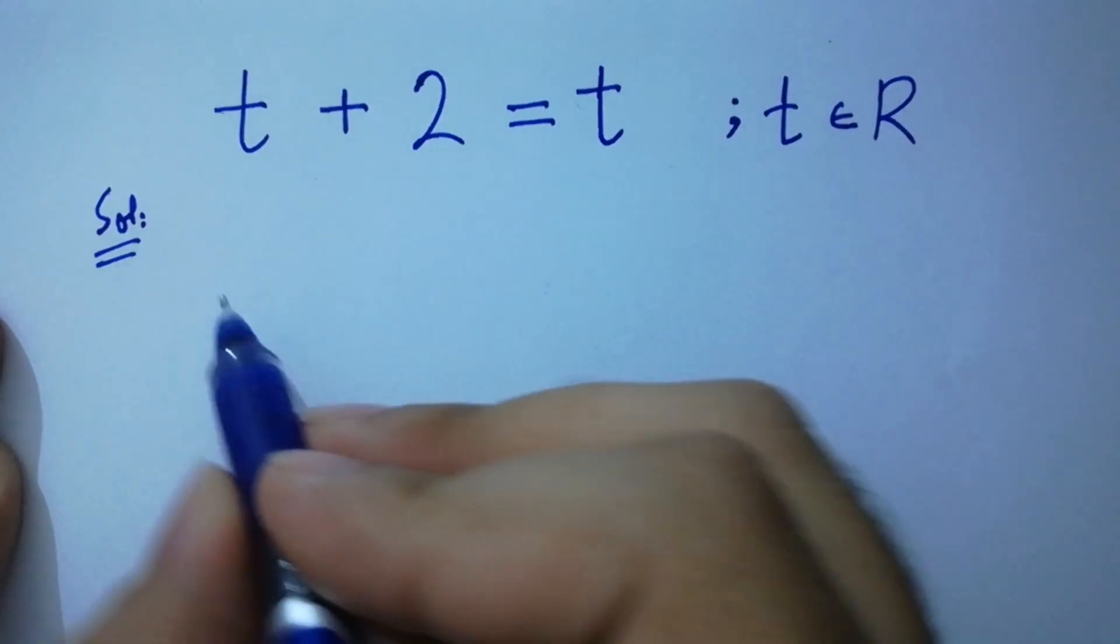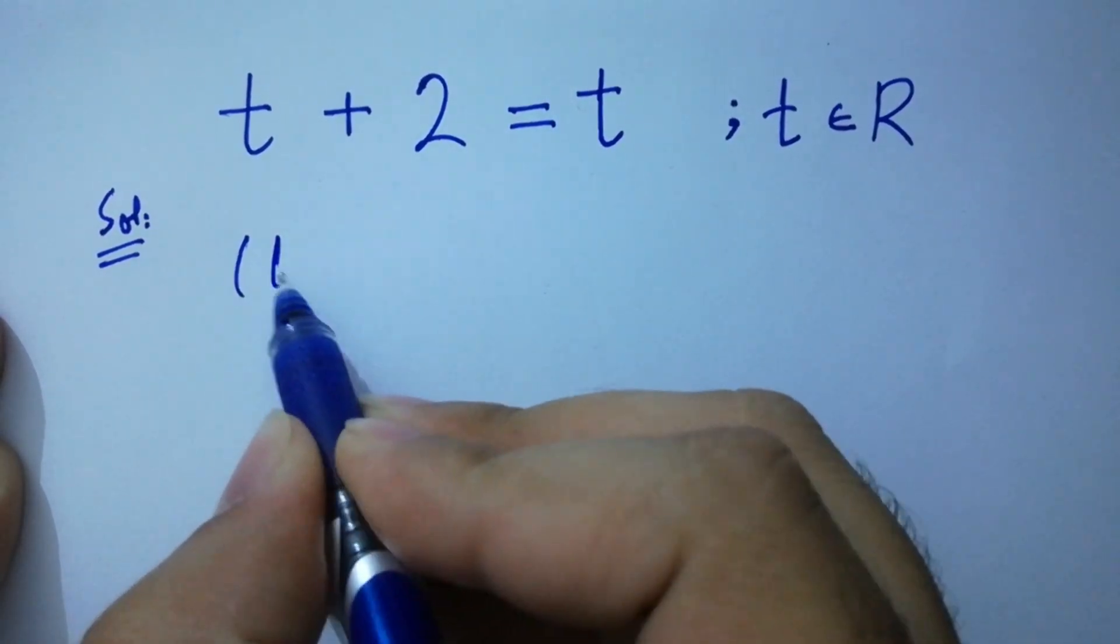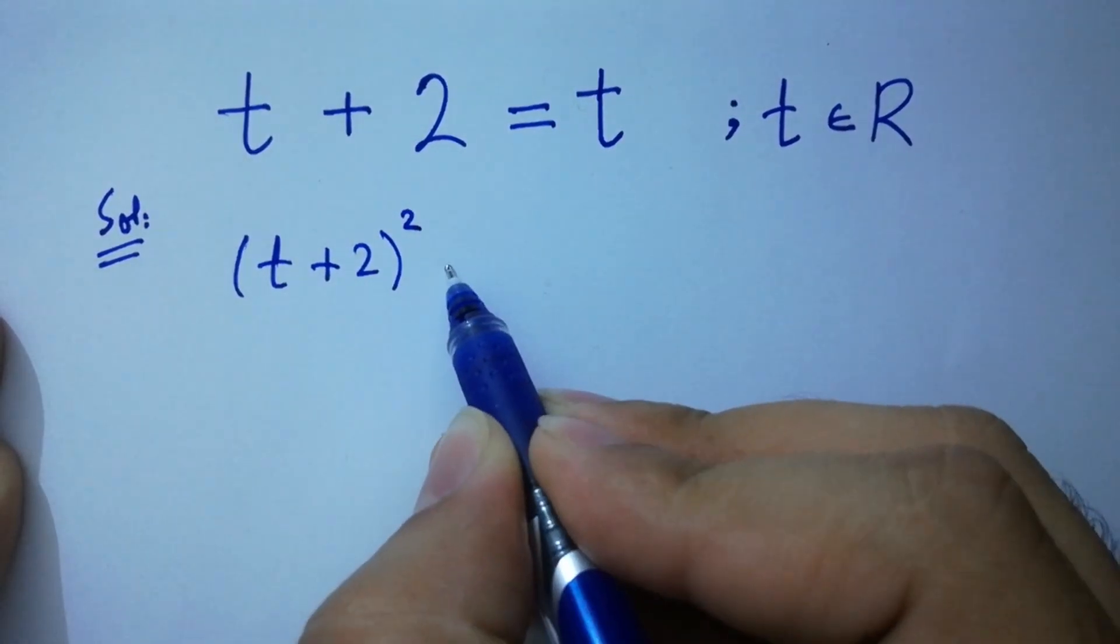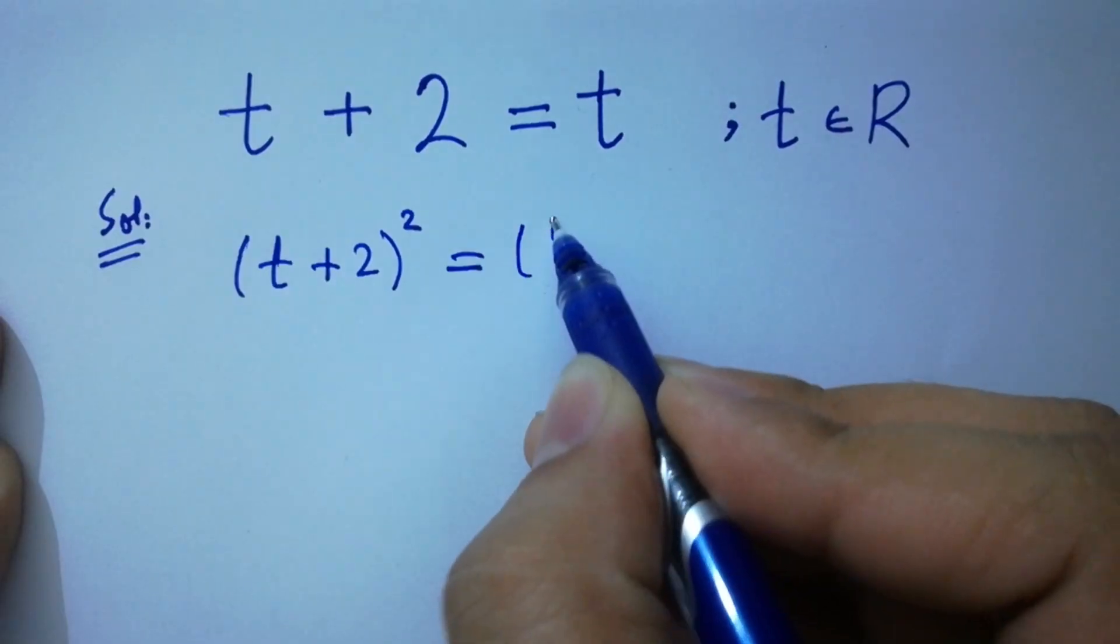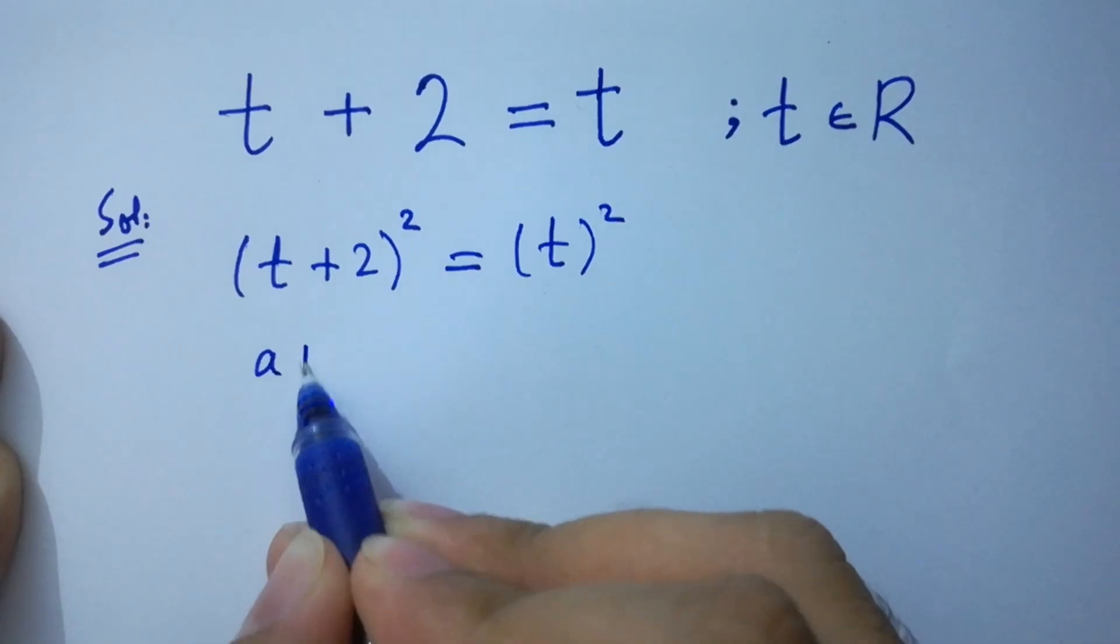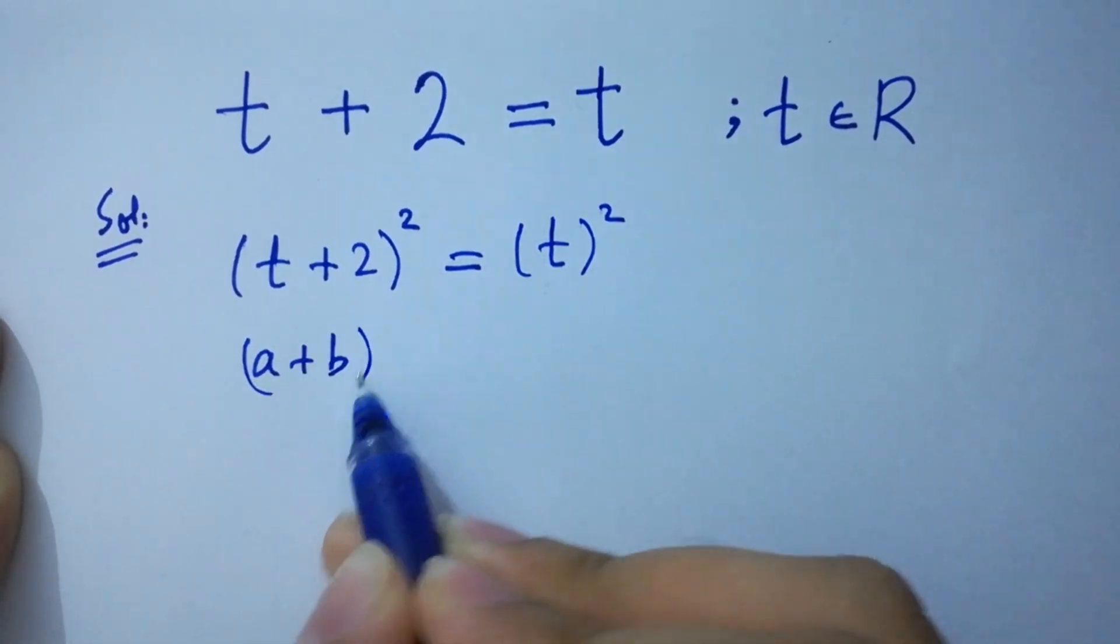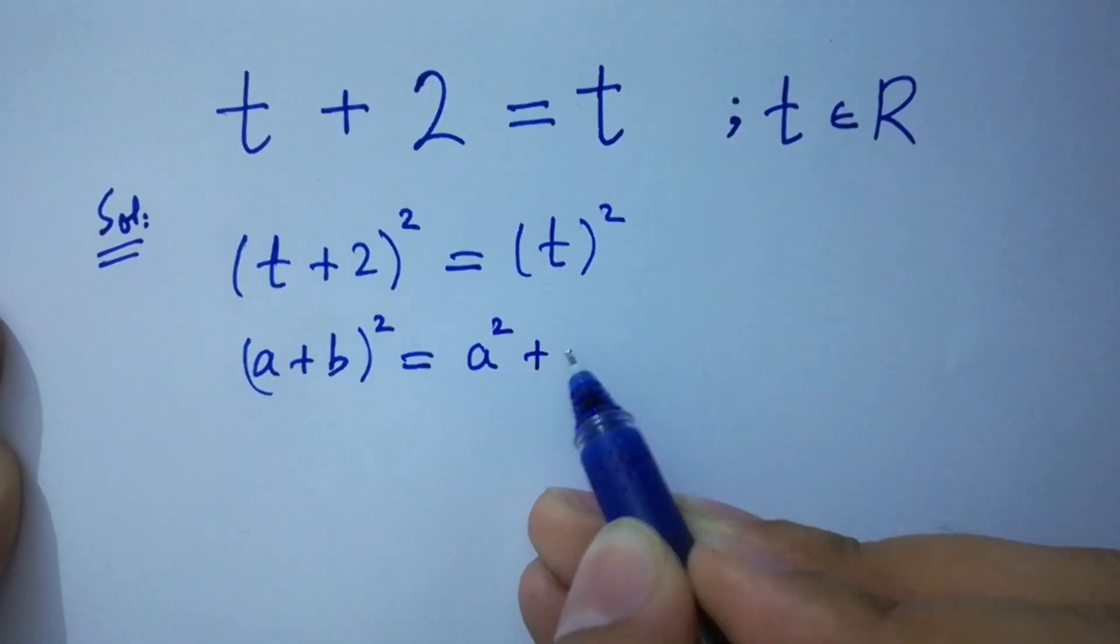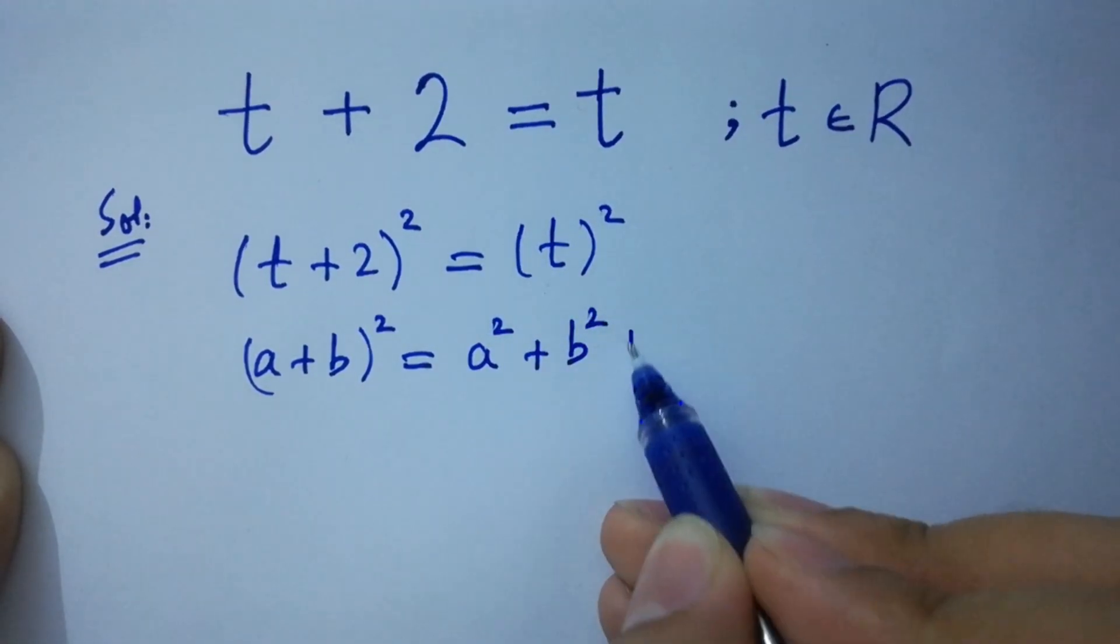t plus 2 whole square equal to t square. We know the formula of a plus b whole square which is equal to a square plus b square plus 2ab.